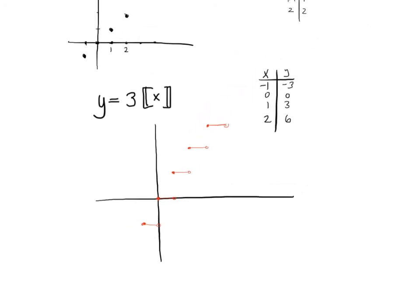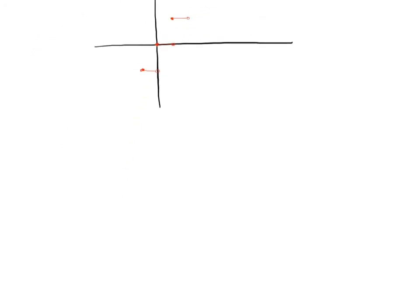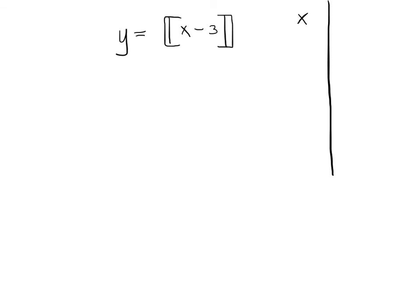We'll do one more. Something like y equals greatest integer function of x minus 3. This is going to be a straightforward shift to the right by 3. But even so, we can do the same deal.